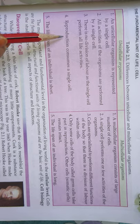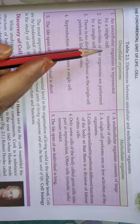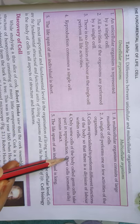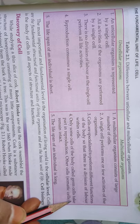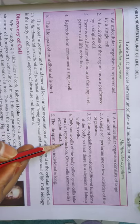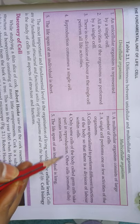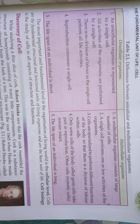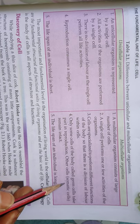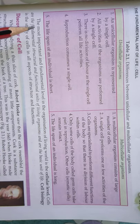Regarding reproduction: in unicellular organisms, reproduction is performed by a single cell. In multicellular organisms, only some cells called germ cells — जिन्हें reproductive cells या gametes भी बोलते हैं — take part in reproduction. Other cells, called somatic cells, जैसे hand, leg, आदि, remain intact and do not take part in reproduction.